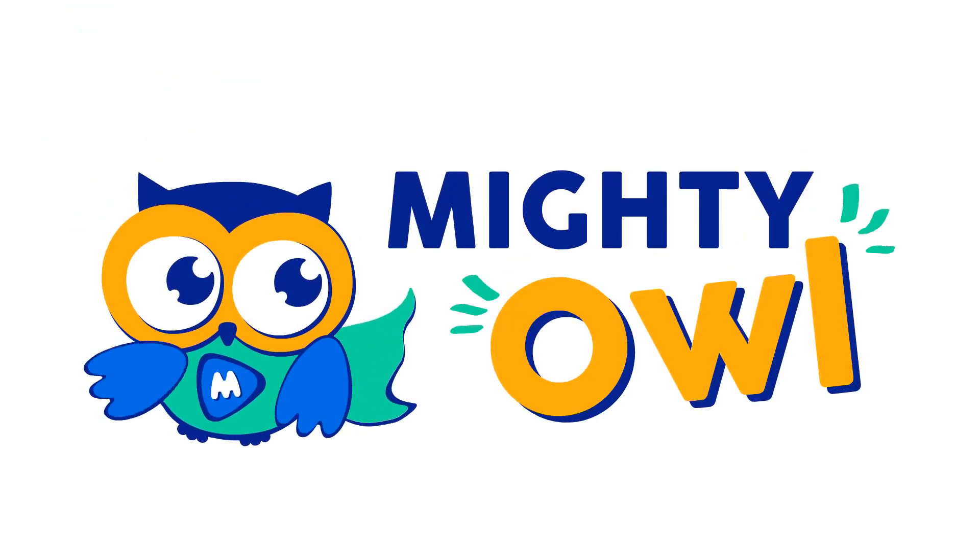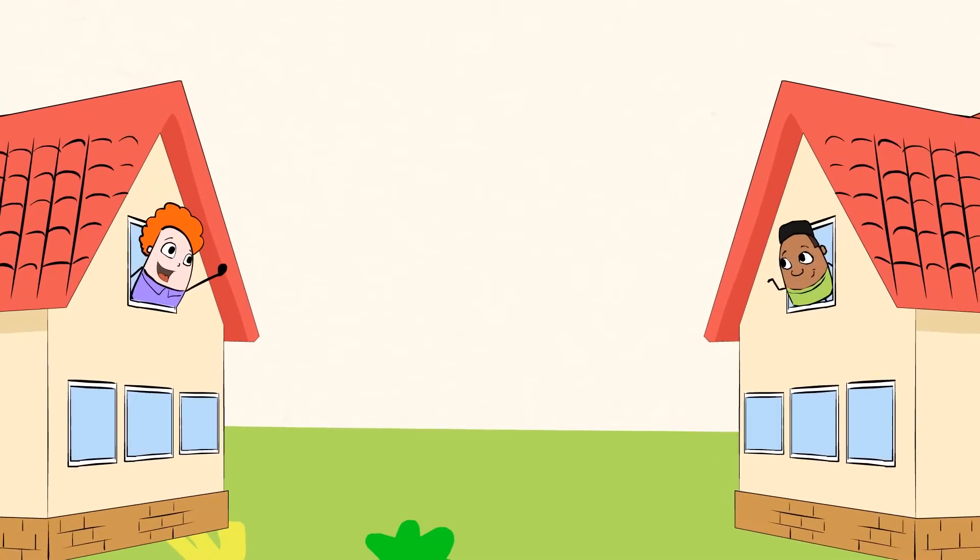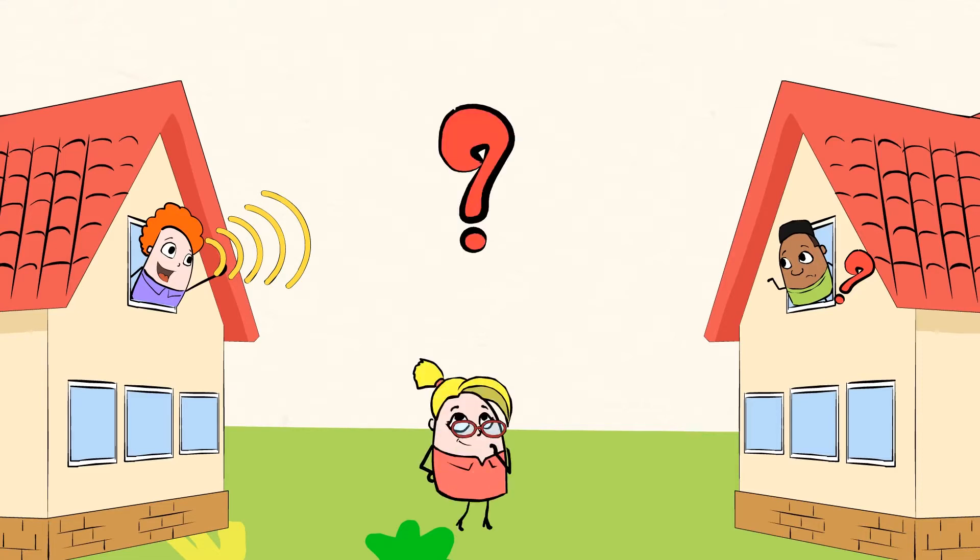Hello, this is Mighty Owl. These two friends are so lucky to live right next door to one another. They can even see each other from their bedroom windows. But it looks like they're having a hard time hearing one another. I wonder if there is a simple way to fix that without using modern technology.